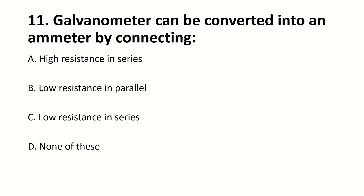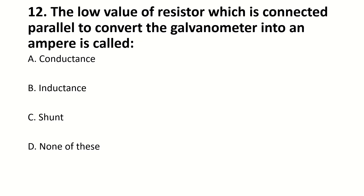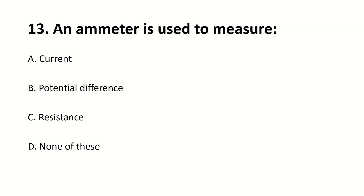A galvanometer can be converted into an ammeter by connecting — blank. Right answer is B: low resistance in parallel. The low value of resistance connected in parallel to convert the galvanometer into an ammeter is called — blank. Right answer is C: shunt. An ammeter is used to measure — blank. Right answer is A: current.